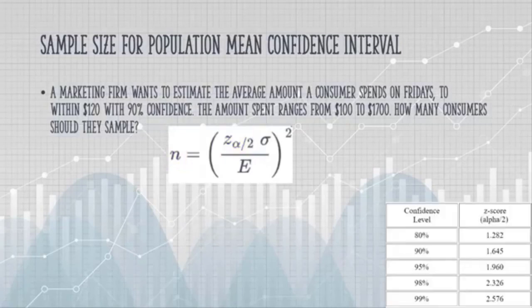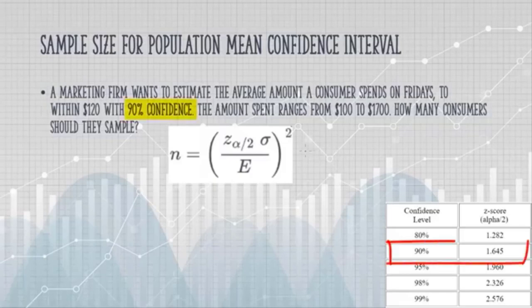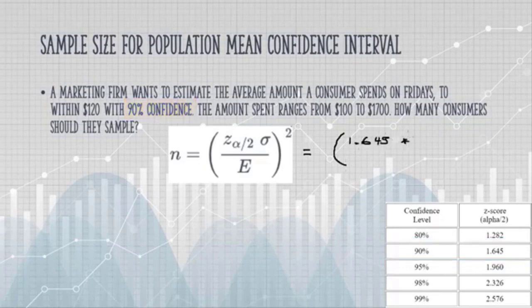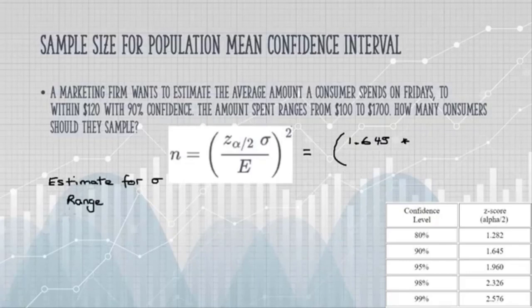If you know the standard deviation, you can go ahead and plug it in here, but we're not given the standard deviation, so I'm going to do an estimate with the formula the range divided by 4. We're given a range of 100 to 1,700. When I divide by 4, I get 400.